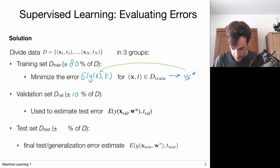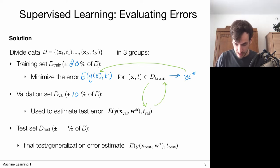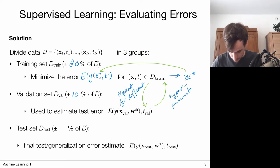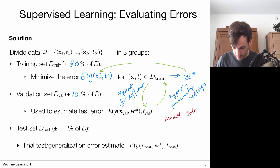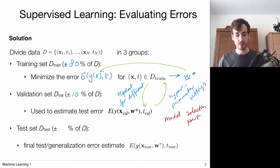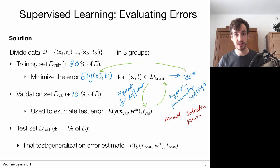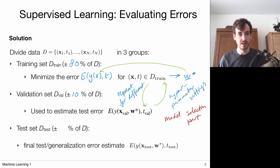The idea is we train a model with a particular hyperparameter, that gives us an error estimate, and then we do this again for different hyperparameter settings. This is really the model selection part — training a model for all these different hyperparameters and selecting the model that performed best on the validation set. But in the end, we also want an estimate of how well the model actually generalizes to unseen data.